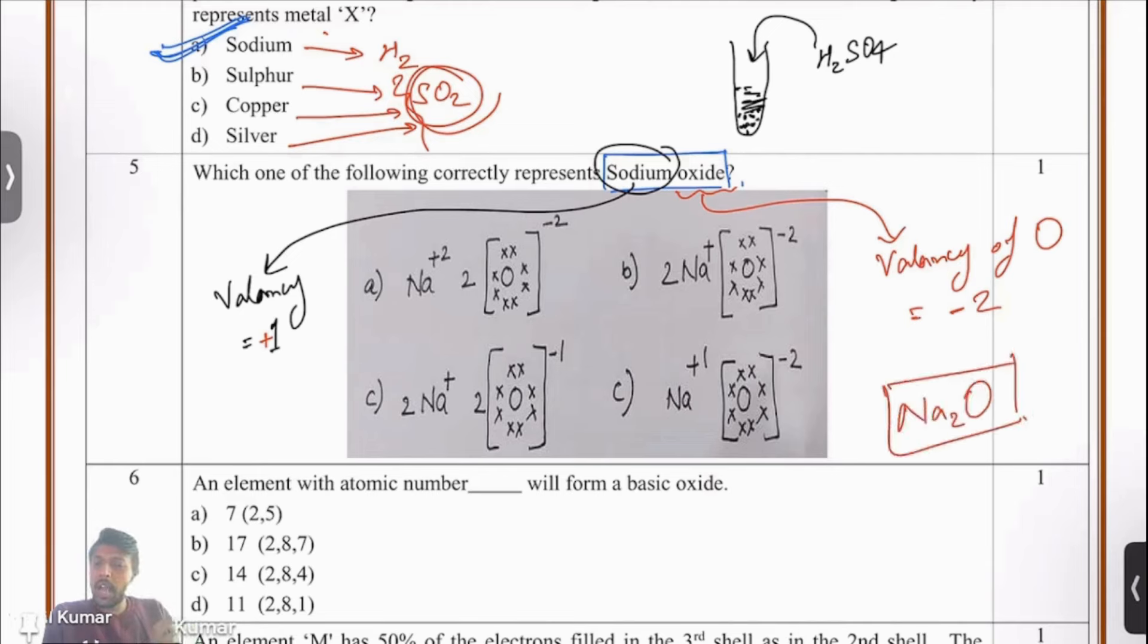Sodium oxide is represented by Na2O. We have to form 8 electrons in the outermost orbit. 6 electrons, oxygen is bringing with it. 1 electron, 1 sodium atom brings with it. So Na2O is the correct chemical formula. Which of these four options A, B, C or D is showing that there are 2 sodium and 1 oxygen atoms? It's option number B. This is the answer. 2 sodium and 1 oxygen.